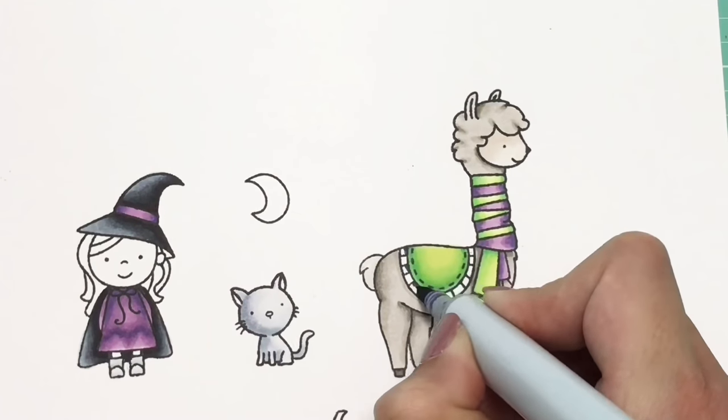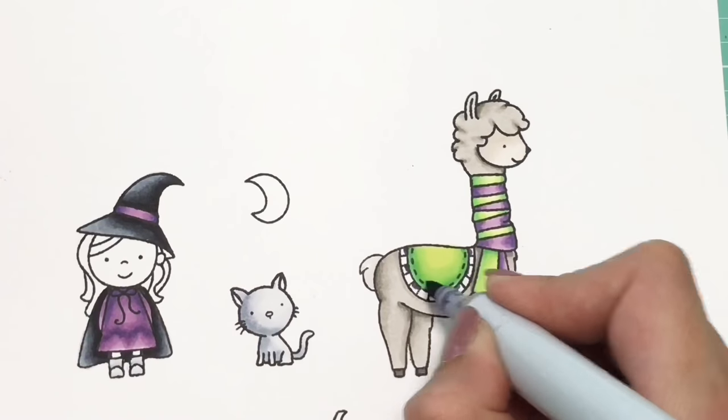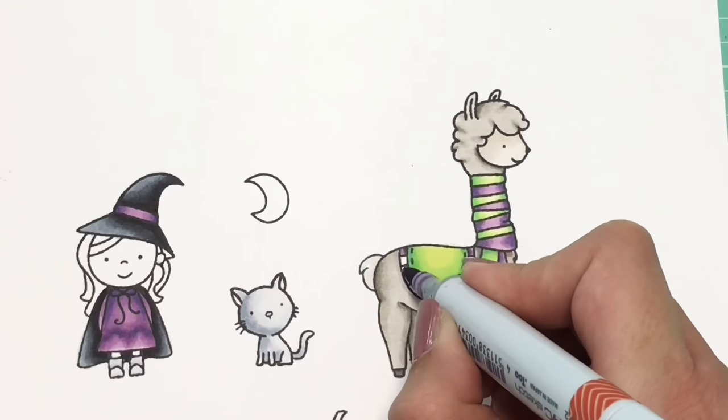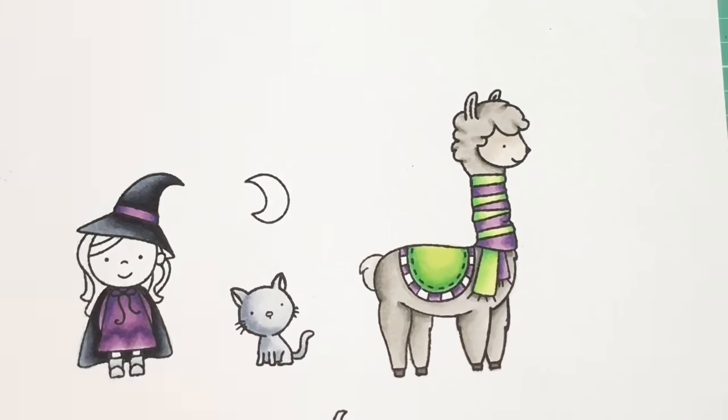If it's a small area, like I said, you do not want to oversaturate the paper because then it will leak outside the lines and you'll just mess up everything that you've worked on. So in these smaller areas, I just go ahead and start with my dark marker, work my way out to my light marker, and it works and blends just fine.